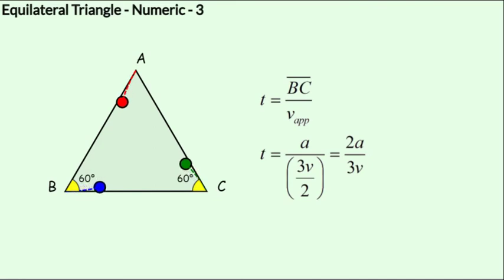The magnitude of the velocity of approach along the line BC is 3v over 2, and the distance BC is small a which is given to us. Therefore, the time taken for B and C to meet, as seen by B, would be the distance a over the velocity 3v over 2, which is 2a over 3v.